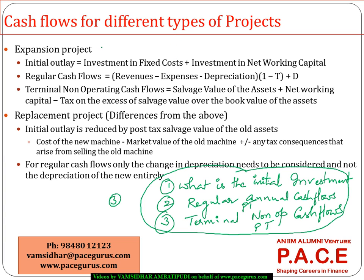If I typically look at an expansion project, the initial outlay will be the investment I am making in fixed costs — which is purchasing some fixed assets like machines or equipment. So whatever is the fixed cost I am incurring, plus whatever is the investment in the net working capital. The investment in the net working capital is nothing but the change in the non-cash current assets minus the change in the non-debt current liabilities. That is what we are calling as the net working capital investment.